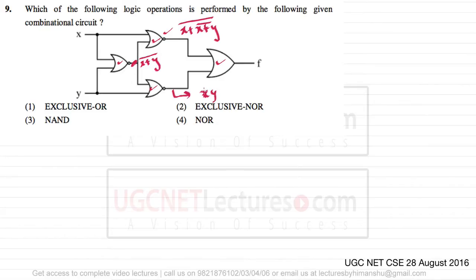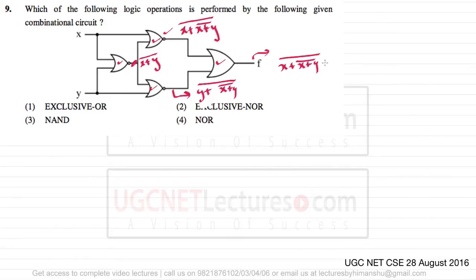The output of the third NOR gate will be (Y + (X + Y)')'. The output of the final OR gate function will be (X + (X + Y)')' + (Y + (X + Y)')'. Now we can open these brackets and complements by applying De Morgan's law.